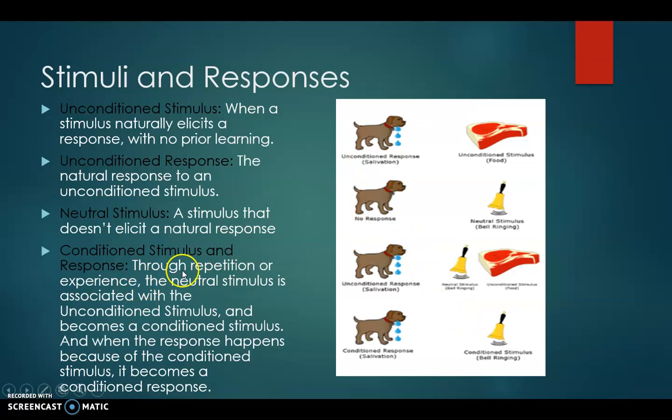So basically what it's saying is through repetitions, repeatedly doing this over and over again, the neutral stimulus, which is the bell, will be associated with the unconditioned stimulus, which is the food. So now this neutral stimulus, since it has been associated with the unconditioned stimulus, becomes the conditioned stimulus. And this response, because it is elicited by the conditioned stimulus, it becomes a conditioned response.